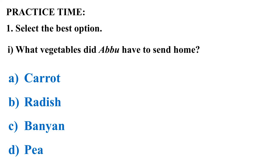Now it's practice time. Select the best option. What vegetables did Abbu have to send home? Options: carrot, radish, banyan, pea. The correct answer is radish.